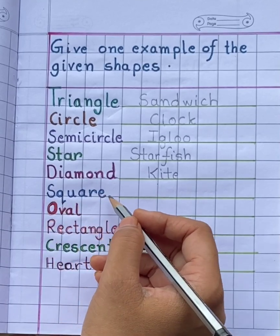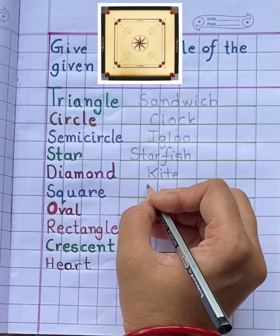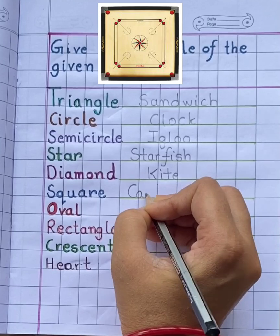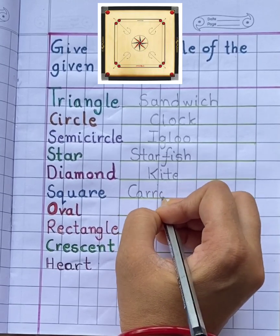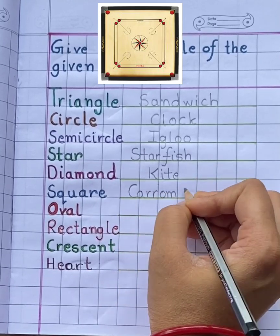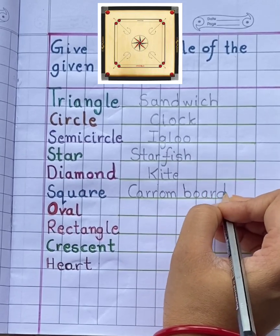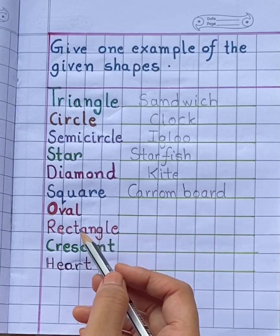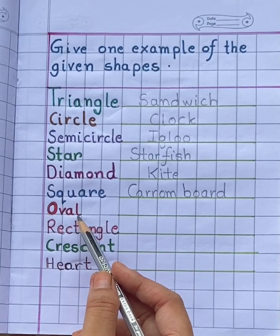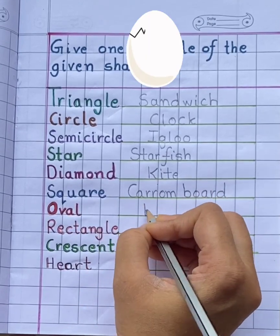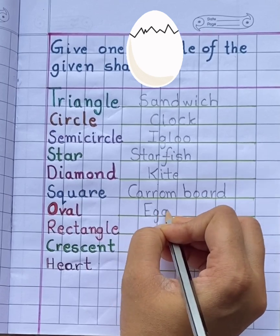Square. Square example is carom board. C-A-R-O-M, B-O-A-R-D. Oval. Example of oval is egg. E-G-G.